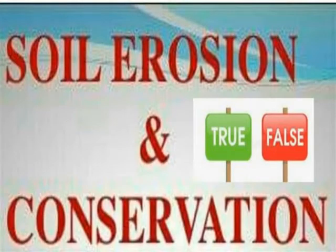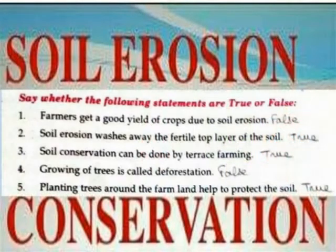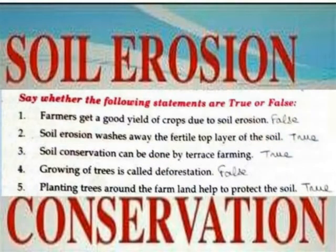Soil erosion and conservation — True or false. Farmers get good views of crops due to soil erosion. False. Soil erosion removes the top layer of the soil. True.